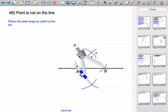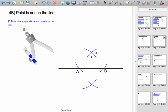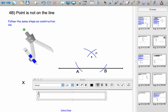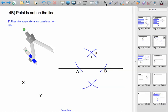And as you should always, label the points of intersection. You can call them whatever you want. I'm going to call them X and Y. We'll put X up here, Y down here.